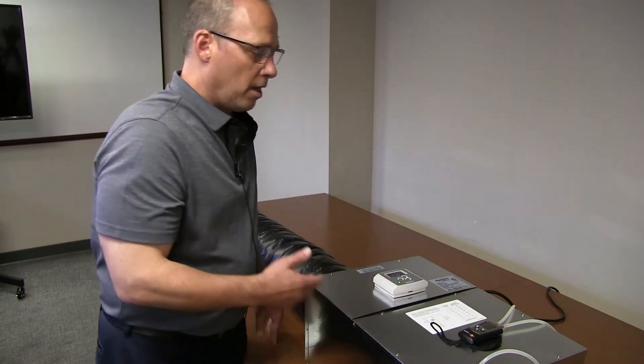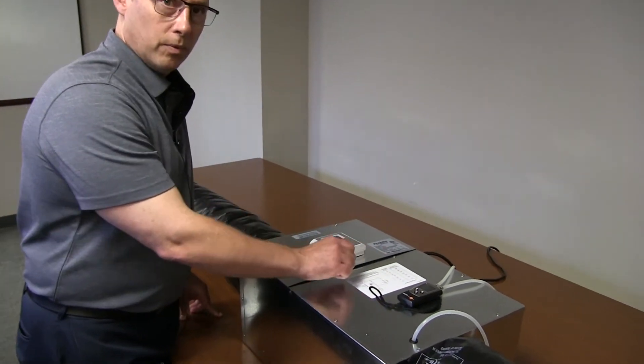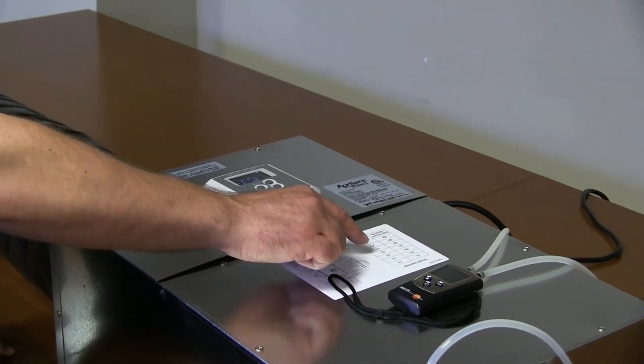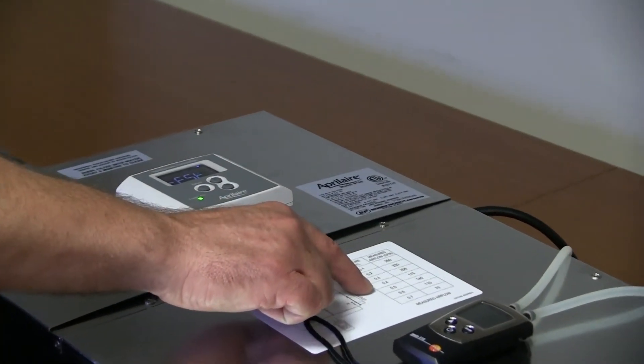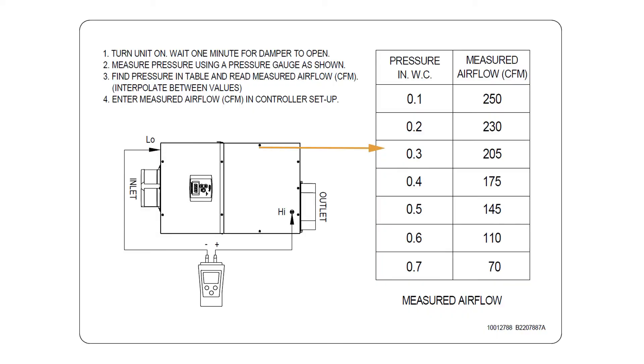So once the damper is open and the pressure reading stabilizes, here we see it's 0.33, that indicates your airflow. So we take that pressure, 0.33, we come to the table that's mounted right on the unit, and we can see that we have a 0.3 and a 0.4 reading. The 0.3 reading is 205 CFM, the 0.4 is 175 CFM. Our reading is 0.33, so it's pretty close to the 205 side. I would estimate our airflow here to be 195 CFM.